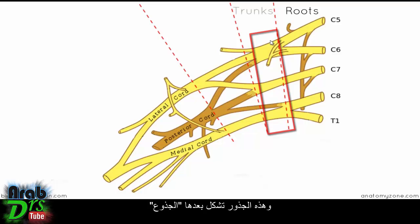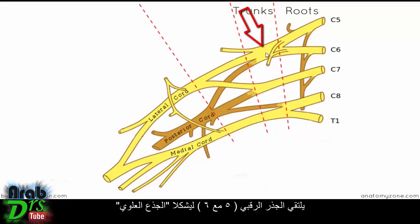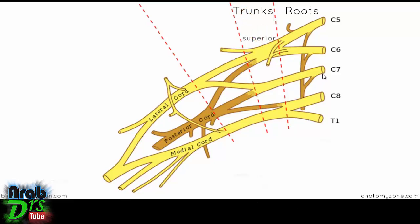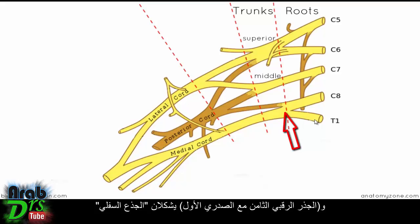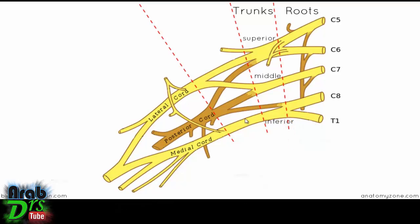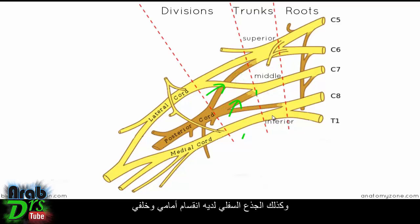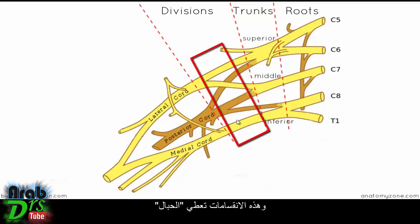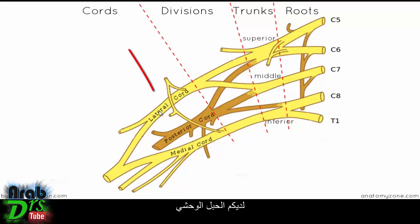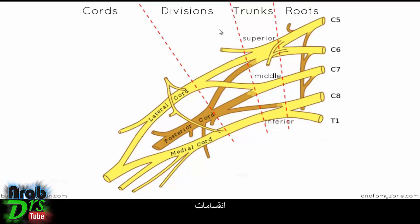These roots form trunks. C5 and C6 converge to form the superior trunk, C7 continues to form the middle trunk, and C8 and T1 form the inferior trunk. Each trunk then gives rise to an anterior and a posterior division — so the superior, middle, and inferior trunks each have an anterior and posterior division. These divisions give rise to cords: the lateral cord, the posterior cord, and the medial cord. So you've got roots, trunks, divisions, and cords.